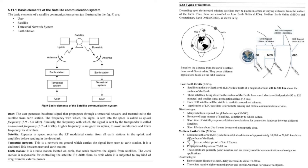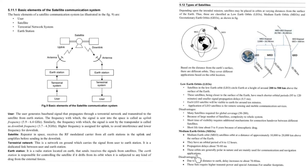Medium earth orbit satellites orbit at a distance of approximately 10,000 to 20,000 km above the earth's surface. They have an orbital period of 6 to 12 hours and a propagation delay of about 70 to 80 milliseconds. These orbits are generally polar in nature and are mainly used for communication and navigation applications.